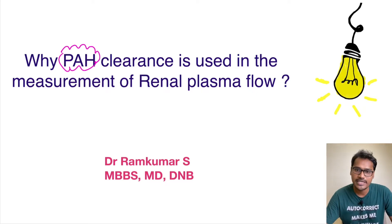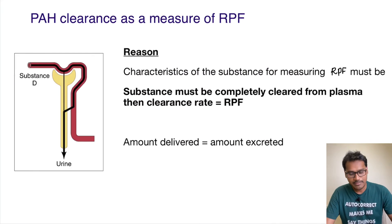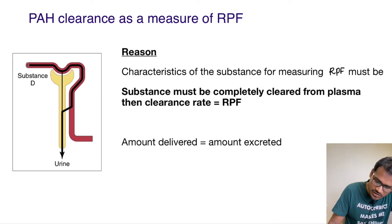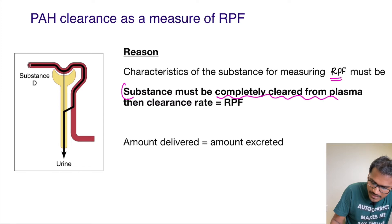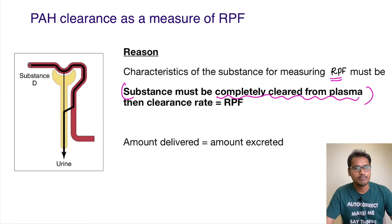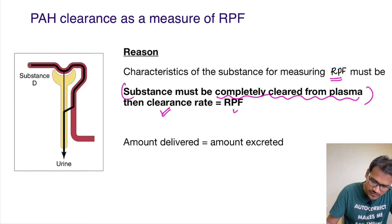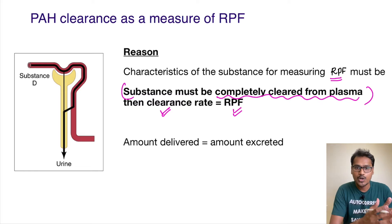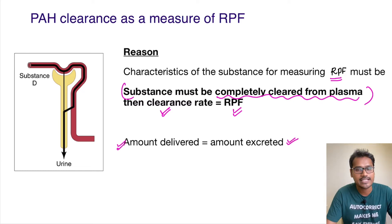What are the characteristics of PAH that make it useful for the calculation of renal plasma flow? For any substance to be used for measuring renal plasma flow, it must have this property: the substance must be completely cleared from the plasma. If any substance is completely cleared from the plasma, then the clearance rate will be equal to that of the renal plasma flow — whatever amount is delivered to the kidney must be completely excreted.